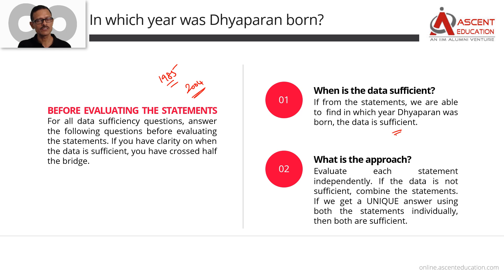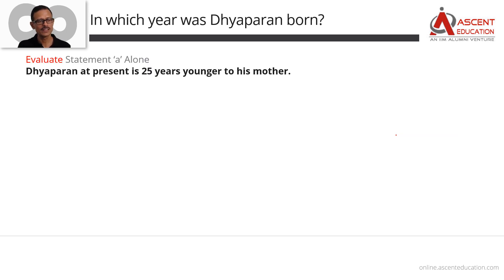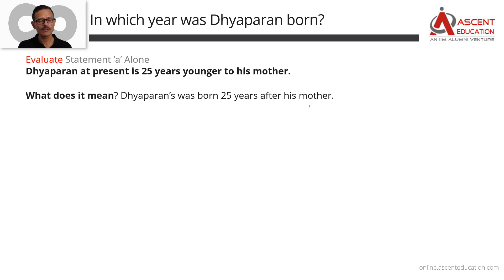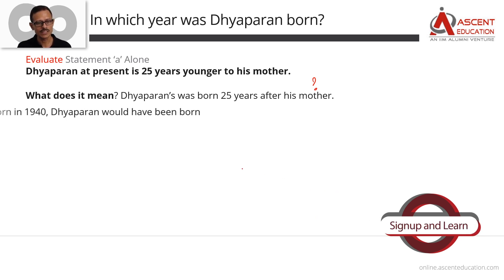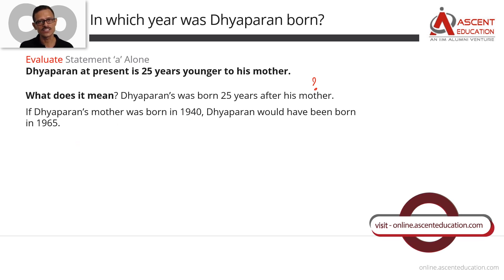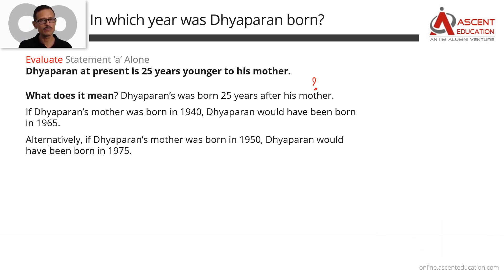Our approach is to start by evaluating statement A alone. Statement A says: Dayavaran is 25 years younger than his mother — meaning Dayavaran was born 25 years after his mother. However, we do not know the year in which his mother was born. For example, if his mother was born in 1940, Dayavaran would have been born in 1965; if she was born in 1950, Dayavaran would have been born in 1975. Since we do not know when his mother was born, statement A alone is not sufficient.